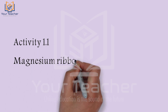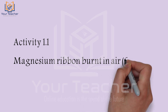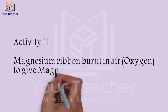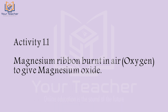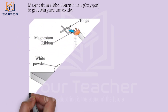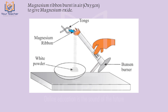Activity 1.1: Magnesium Ribbon Burn in Air. Magnesium reacts with oxygen in the air. When we burn the magnesium ribbon, a white powder is formed in the watch glass — that white powder is magnesium oxide. A new product, magnesium oxide, is formed. This is a chemical change.